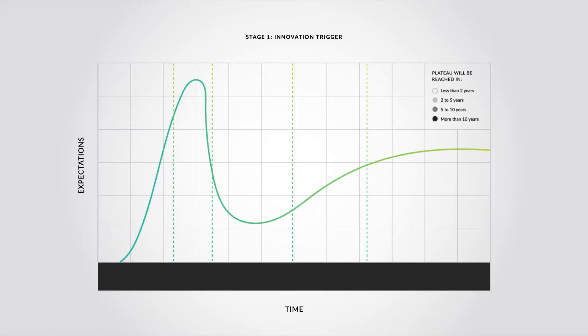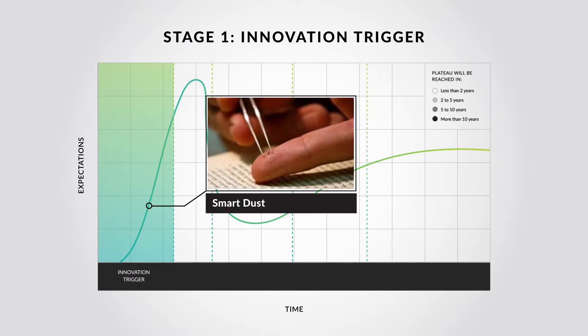We begin with the innovation trigger. This is the moment a new concept appears. It's too soon to know how this technology will affect the world. There may only be prototypes of products at this point, but people get excited. Technologies like SmartDust are currently in this phase, a new camera that is the size of a grain of salt.